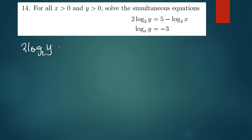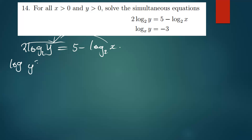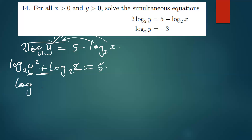...log y base 2 being equal to 5 minus log of x. This is our first equation. I'm going to take this log x base 2 to the other side of the equal sign, and I'll raise y to the power 2, meaning I'm going to have log of y squared base 2. Then this log, when it comes to the other side, is going to be plus log x base 2 being equal to 5. When you're adding two logarithms you multiply the functions, so we get log of x·y² base 2 equal to 5.